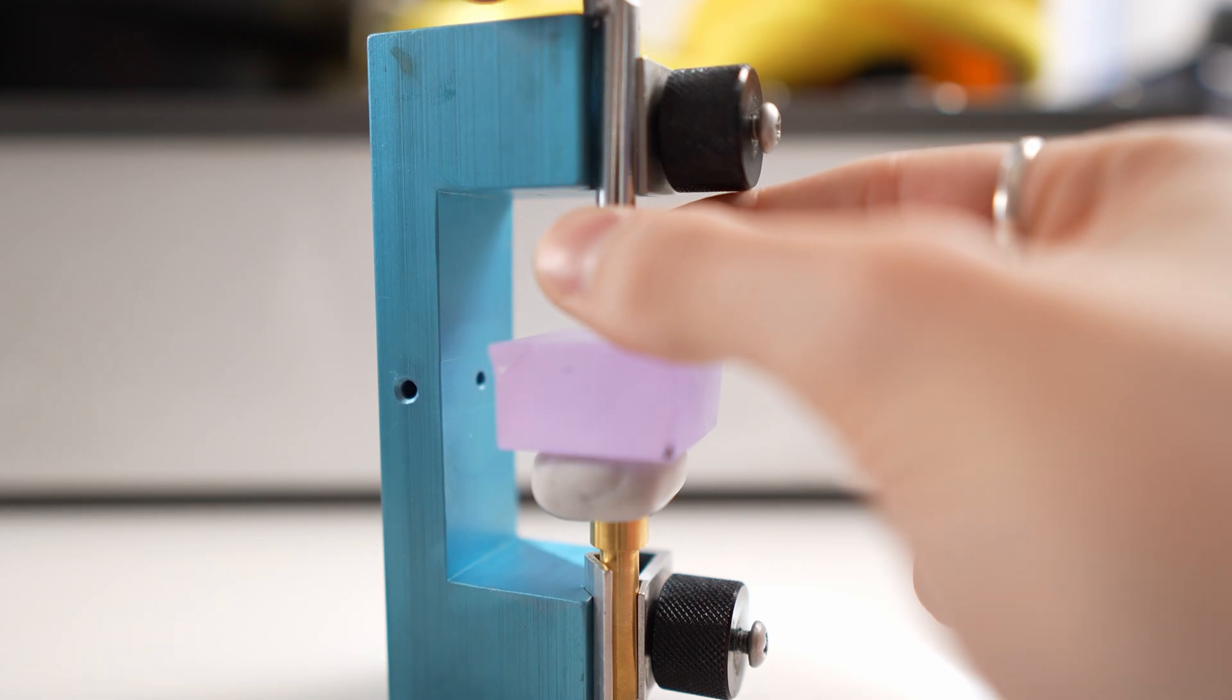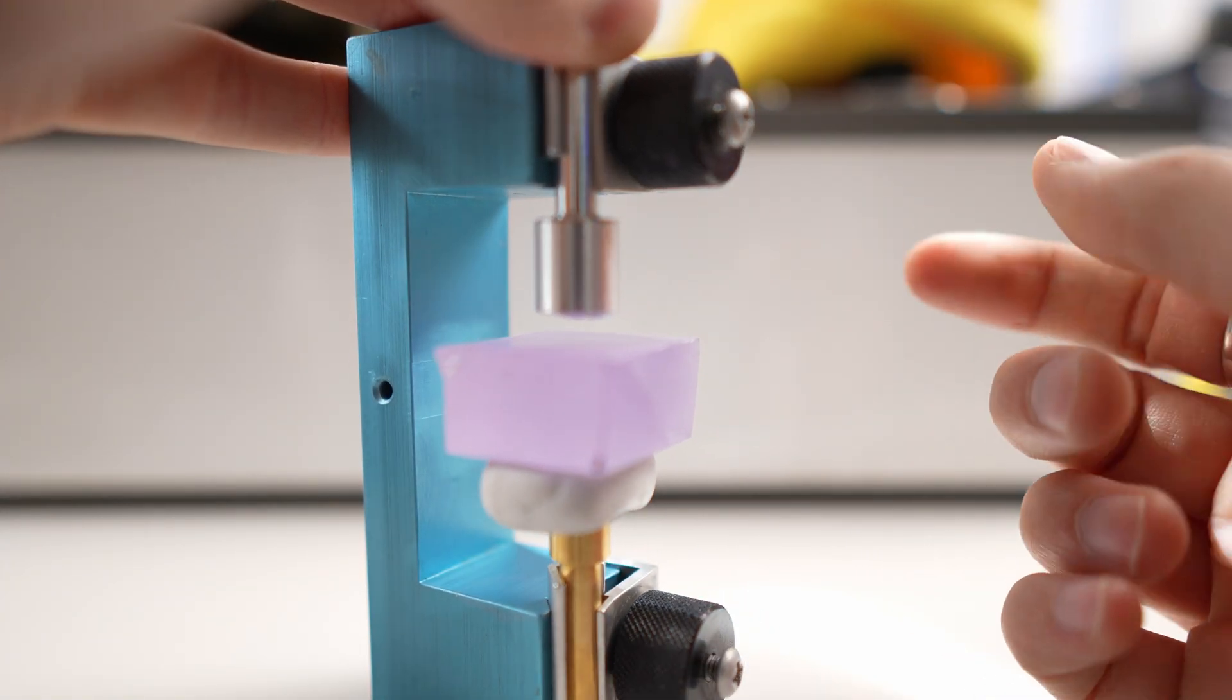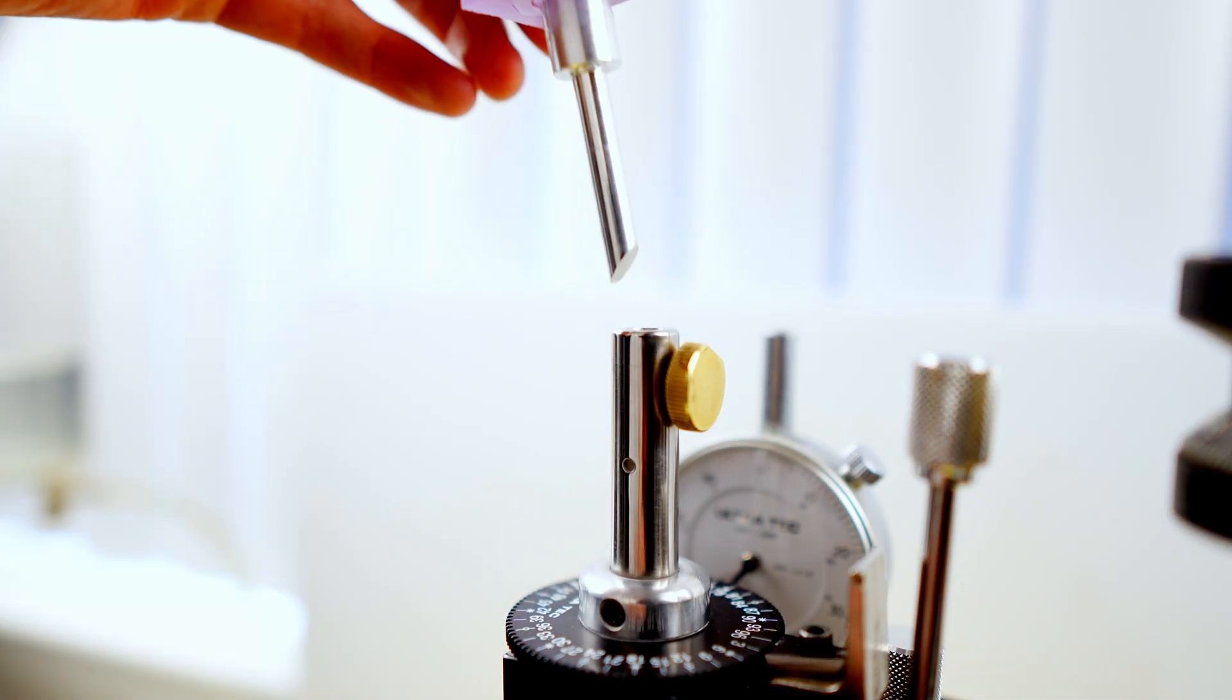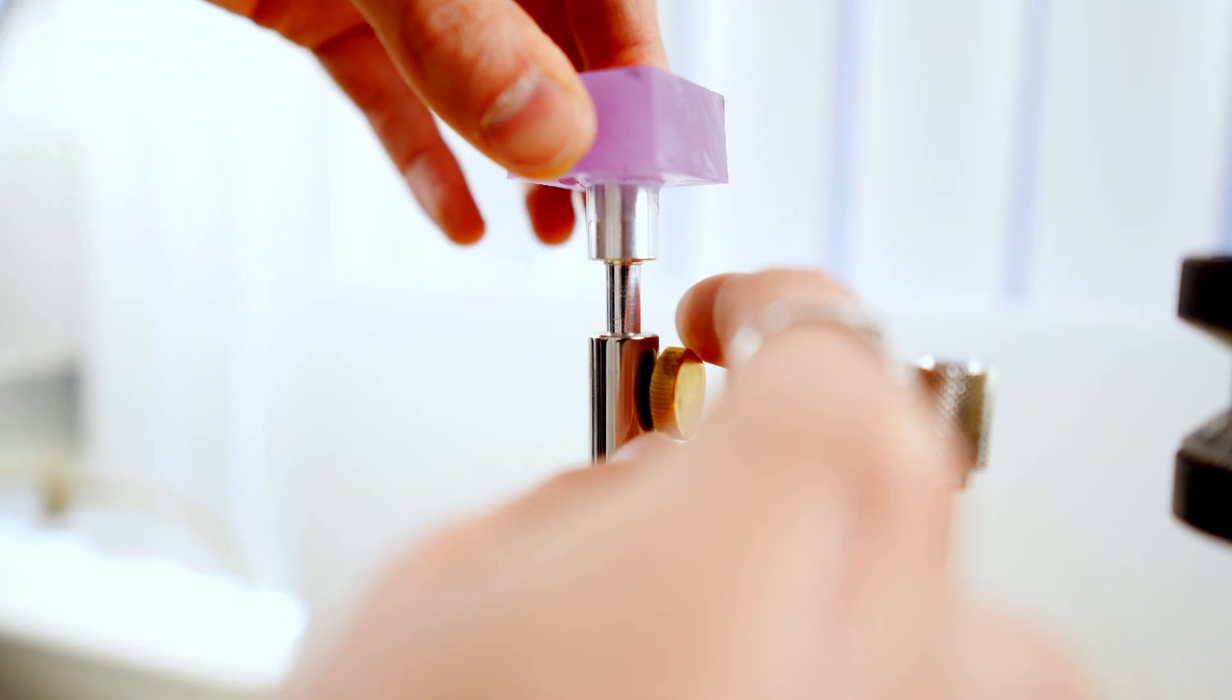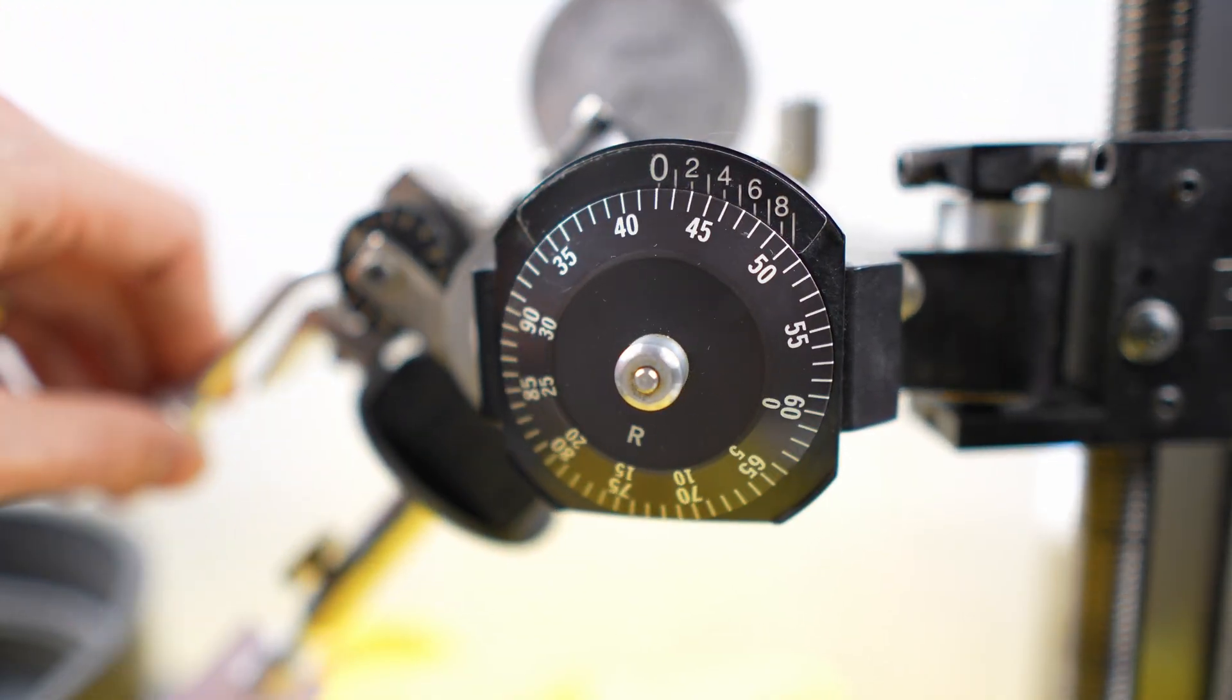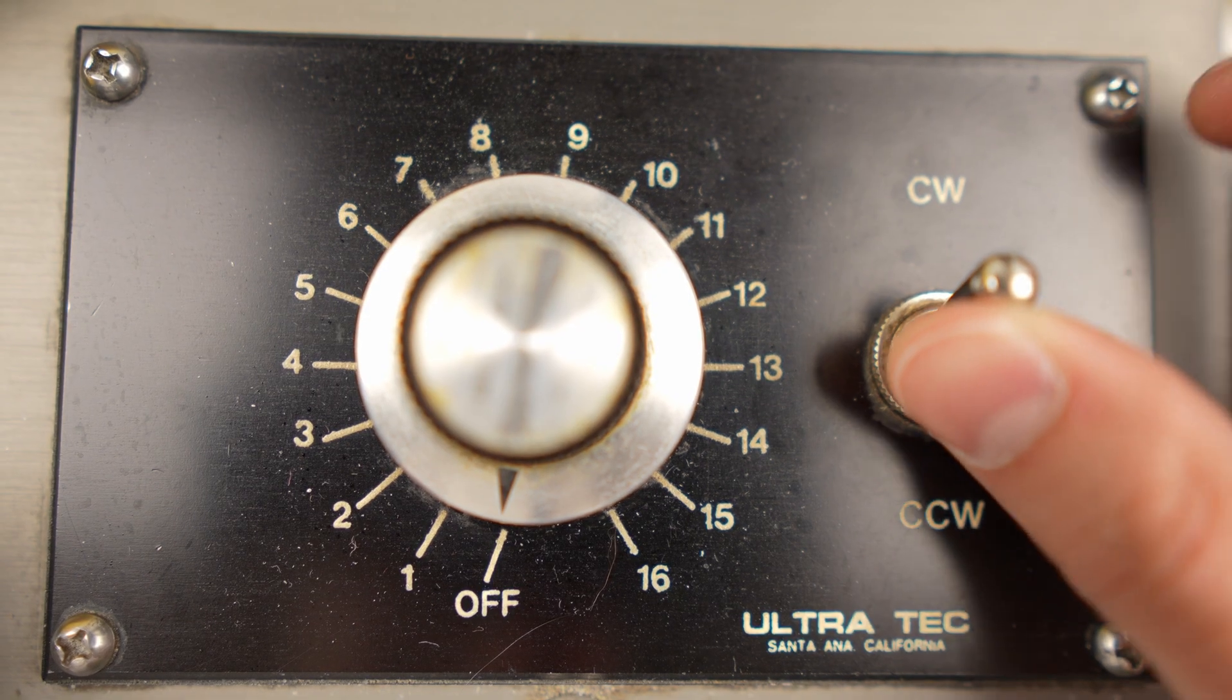Now we will attach the dop stick to the stone. Now that we have our stone glued to the dop stick, the next step is to slot it into our faceting machine. Set the angle. Lower the mast. Let's get to work.